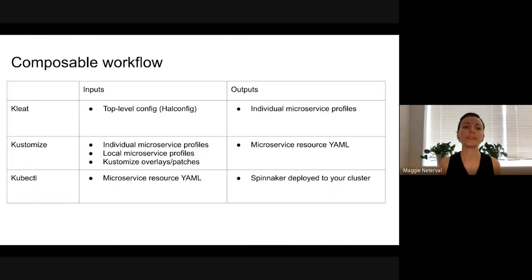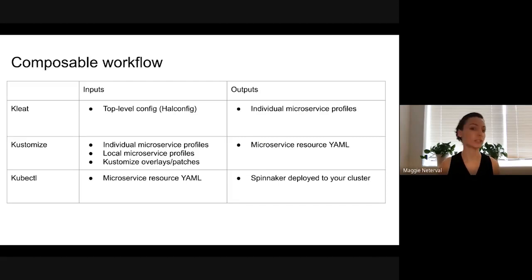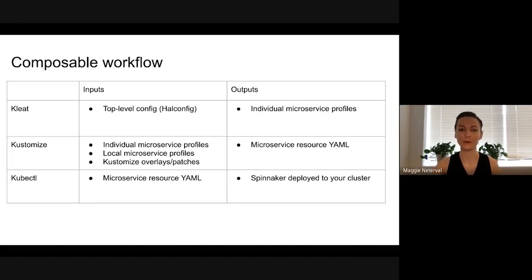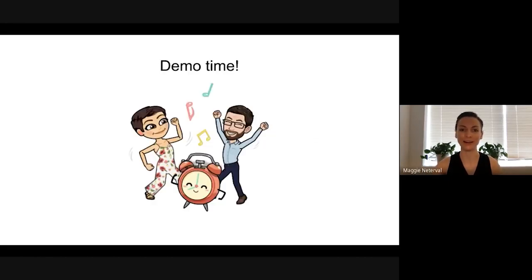The one piece that really is Spinnaker-specific and can't be replaced by an existing tool is transforming a top-level Spinnaker config file — a HAL config — into each individual microservice profile. So we decided to write a lighter-weight CLI that does only that. We've decomposed the Halyard workflow into tools that just do what they're best at: Klee translates the HAL config into individual service configs, Kustomize composes the resource YAML, and kubectl applies it.